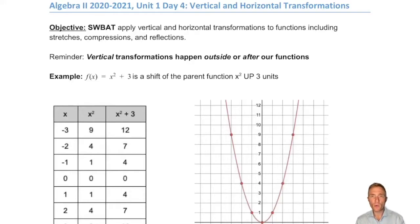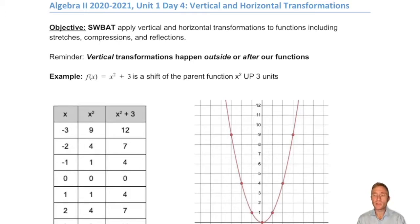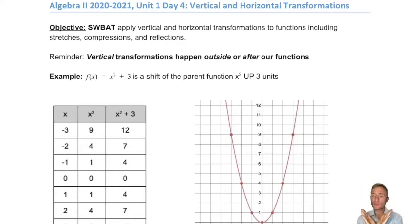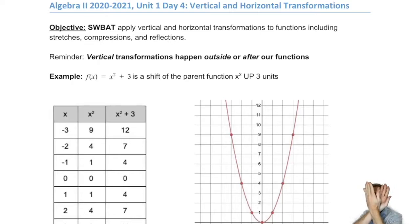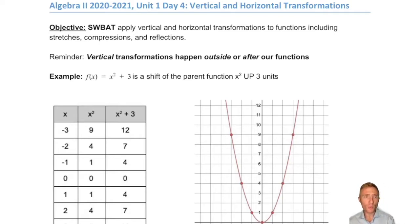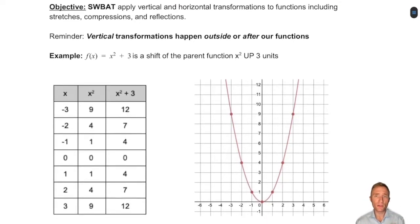Algebra 2, Unit 1, Day 4: Vertical and Horizontal Transformations. Today we're going to be talking about the other kinds of transformations that we can perform on functions. In our last lesson, we talked about vertical shifts up and down and horizontal shifts left and right. Today we're going to be adding a few more into the mix, including making our functions steeper, making them wider, flipping them upside down, or flipping them across the y-axis. We're going to go through how each of these happen, starting with a review of what causes a transformation to be vertical versus horizontal.